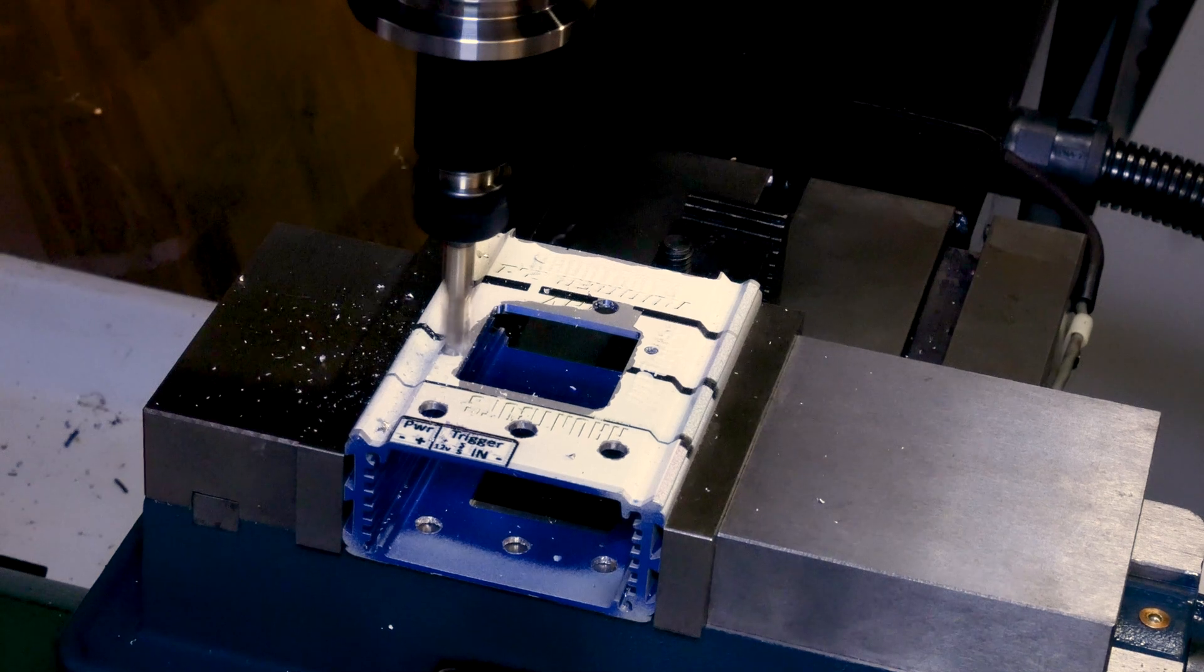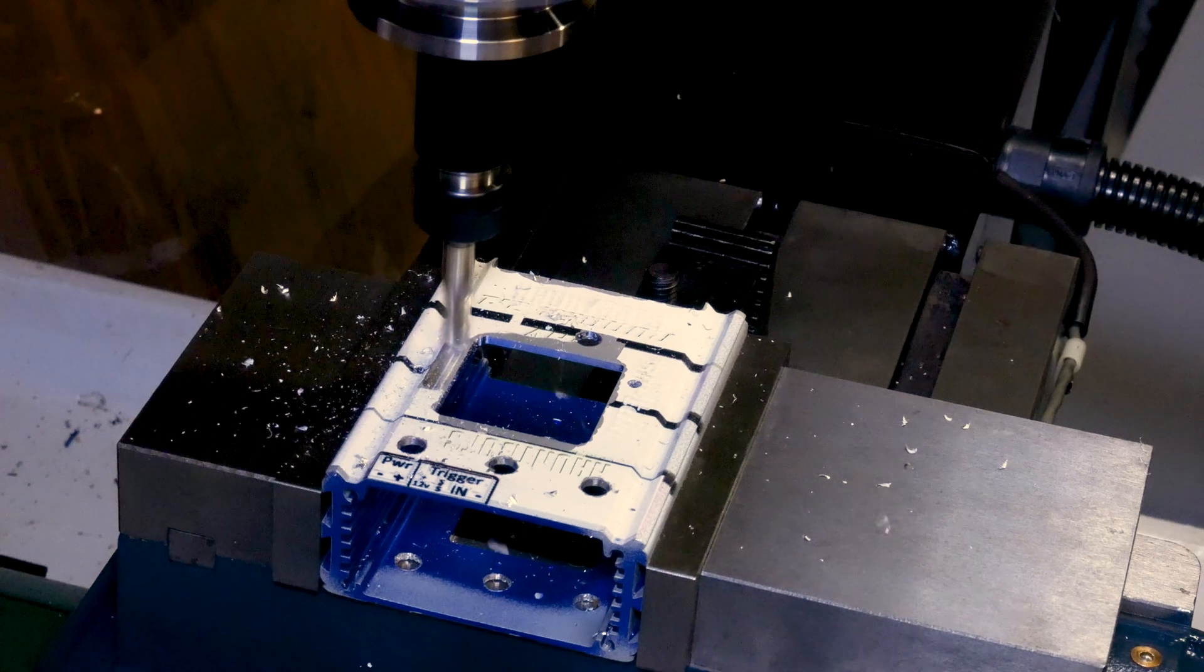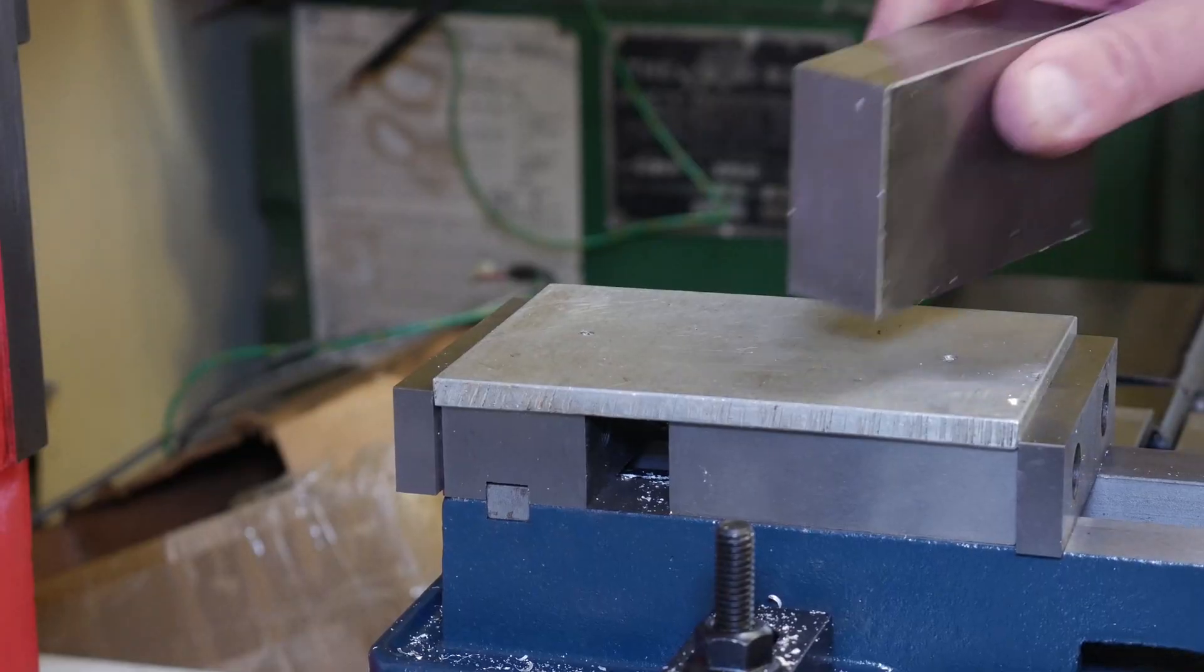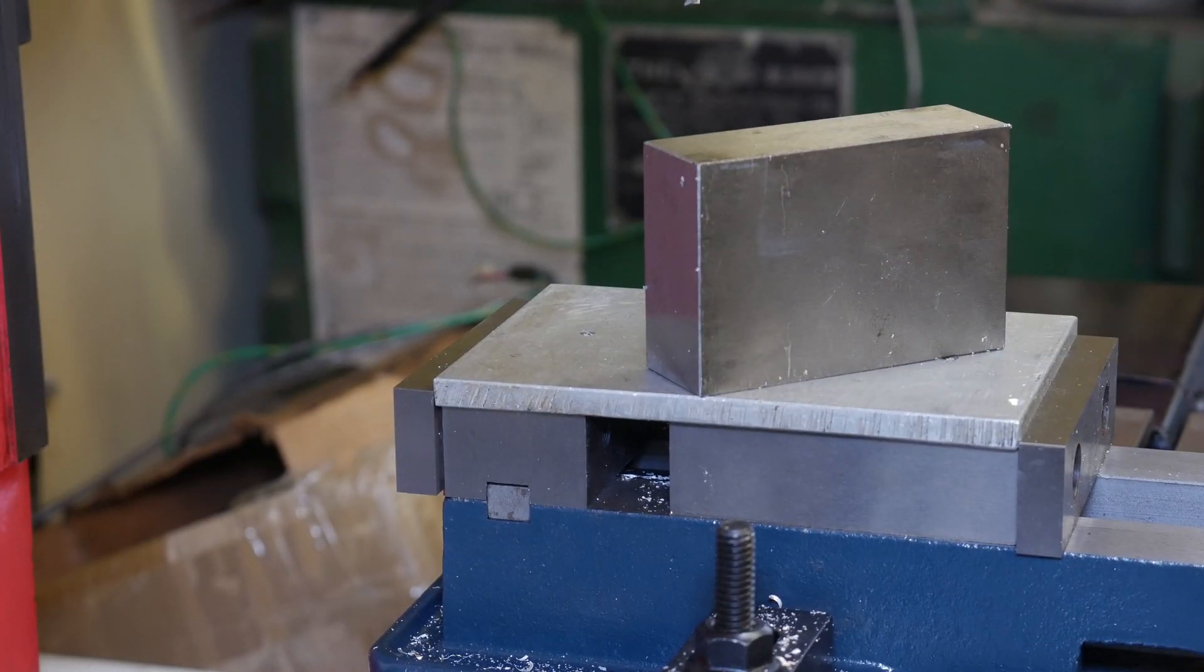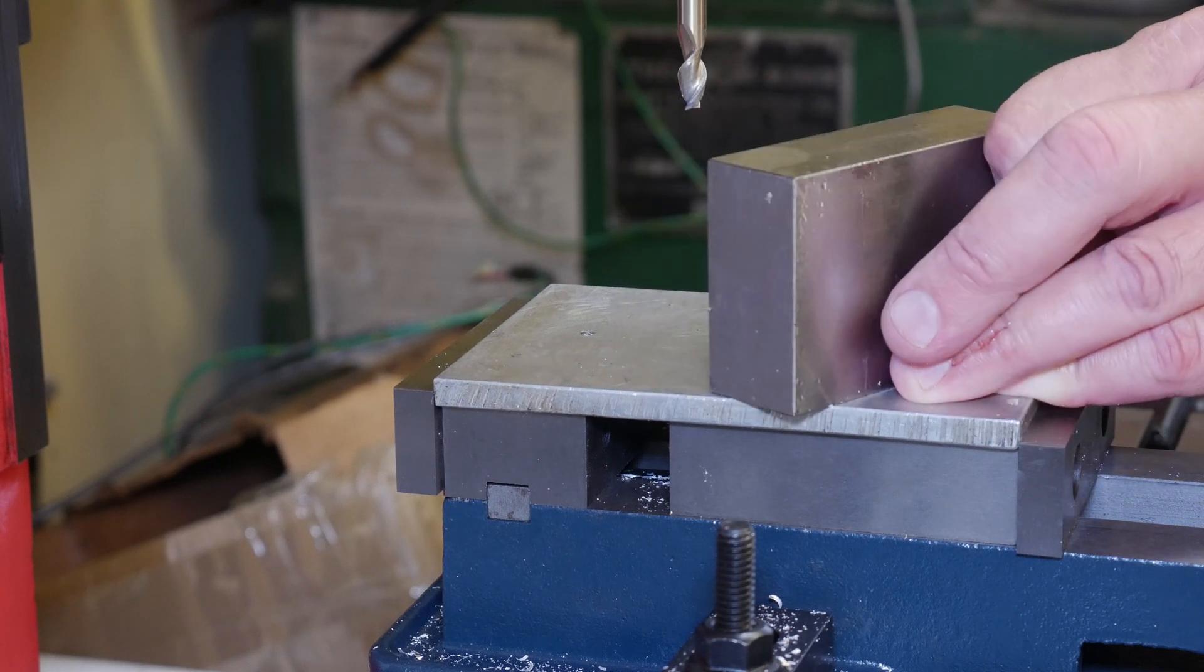For this initial cut, I just did some manual jogging into an old aluminum box. So far, so good. Next, I put a piece of aluminum in the vise, and did my first tool height offset on this machine.